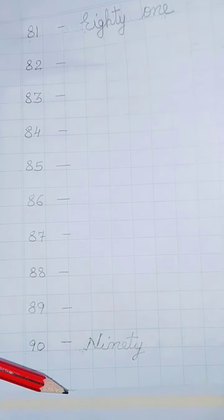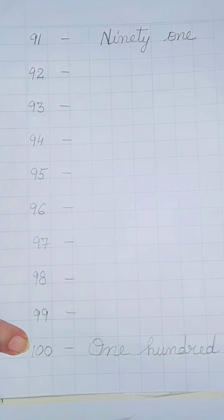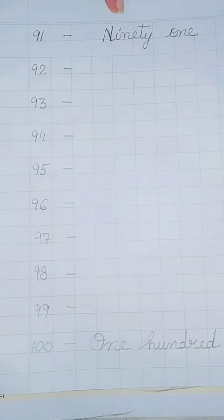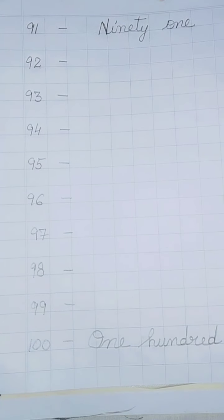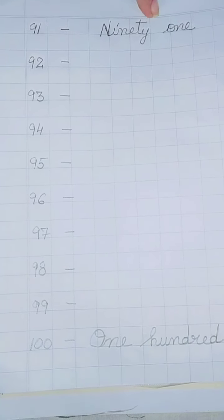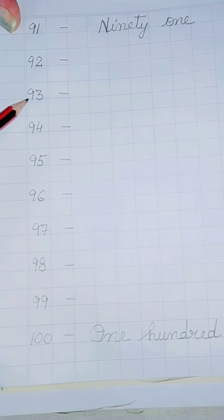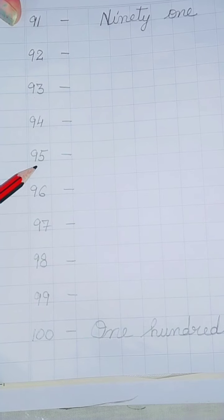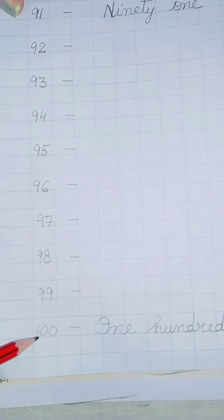In the same way you have to do. This is the last page. 91 to 100 you put the numbers. Spelling of 91, N-I-N-E-T-Y-90-O-N-E-1, 91. So 92, 93, 94, 95, 96, 97, 98, 99, 100.